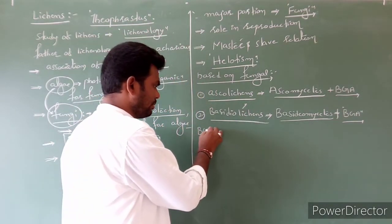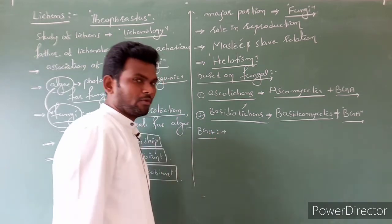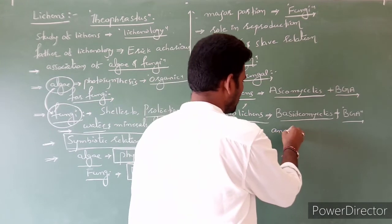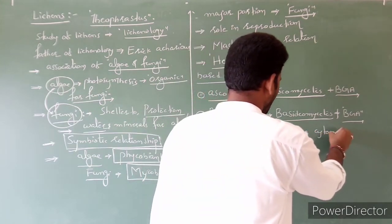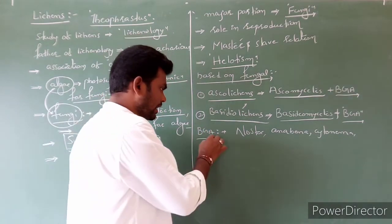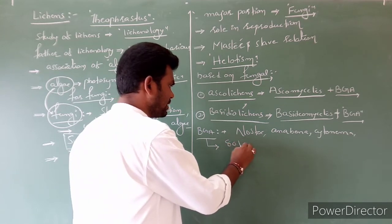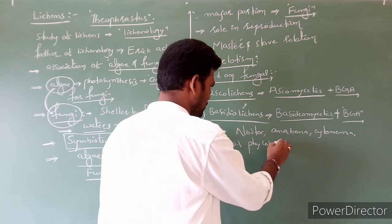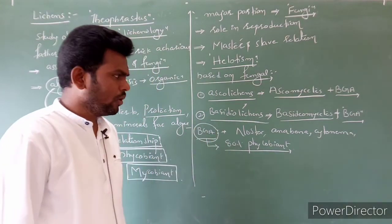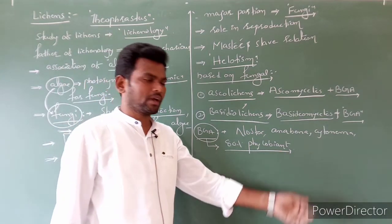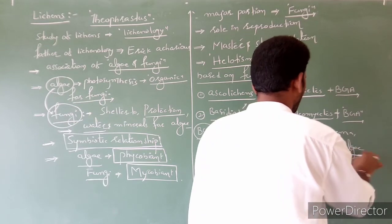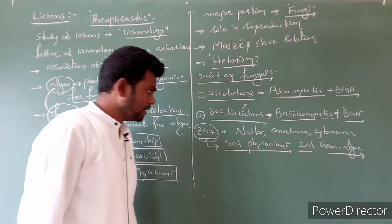The algal partner is mostly BGA — also called cyanobacteria — which can perform photosynthesis. Examples of BGA are Nostoc, Anabaena, and Scytonema. In certain lichens, 80 percent of the phycobiont is only BGA, and only 20 percent are other green algae.